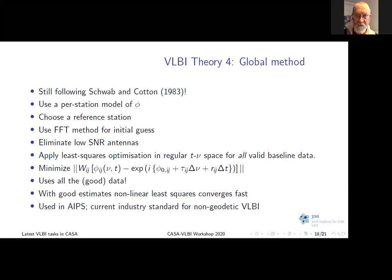That method was introduced by Schwab and Cotton, implemented in AIPS, and with one or two implementation detail adjustments, that's also what we use in CASA. When developing this, we went to quite a lot of trouble to compare our results from the CASA implementation with the AIPS implementation and checked that it was producing similar results in all cases. Once you've found those parameters, that's your fringe fitting calibration and you apply it to your heart's content.